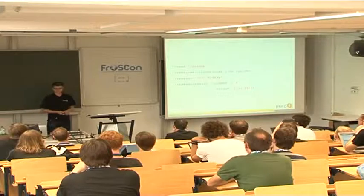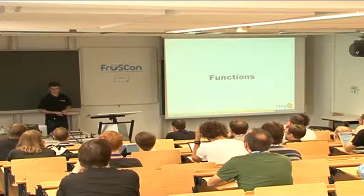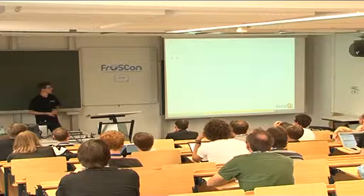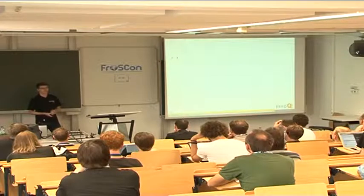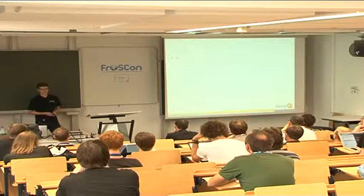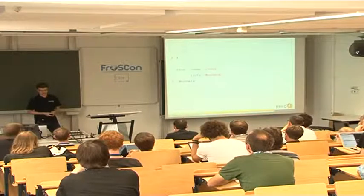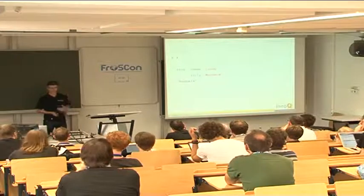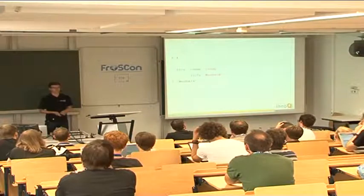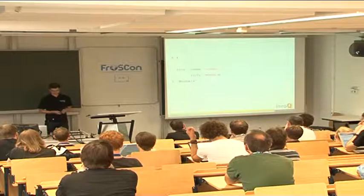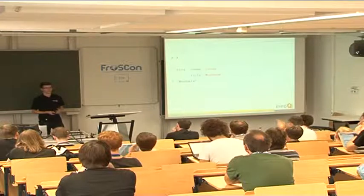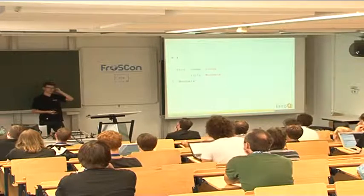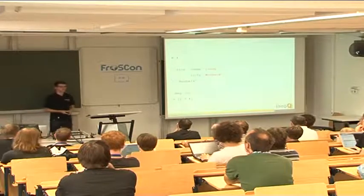Of course we don't only want to define data, we'd also like to work with it, and for that we use functions. Using functions is always represented by a list — the first element of that list is the function, and everything after it are the arguments. So here we sum up one and two and the result is three. We can also use keywords as functions — we pass a map to the city keyword and the corresponding value is looked up. In Clojure one uses maps to hold data and keywords to access the data, rather than Java beans with getters. A very important property of Clojure functions is that they are first class.